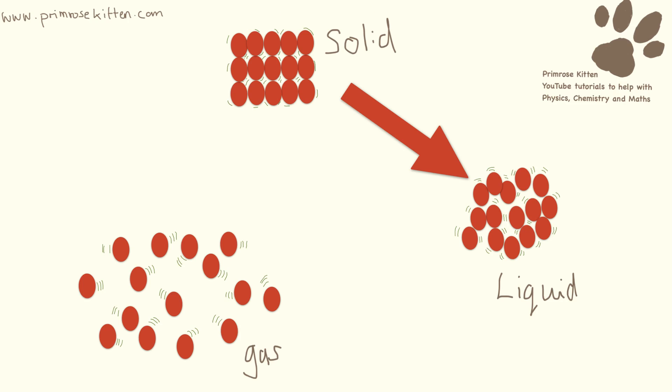So here I have my solid, my liquid, and my gas. I've drawn a red arrow here to show that it's heating up and we are putting energy in. When we go from a solid to a liquid, we are boiling. A liquid to a gas is evaporating.